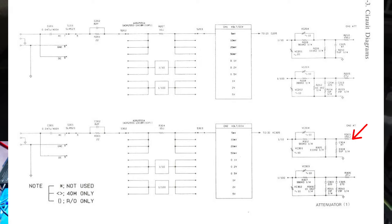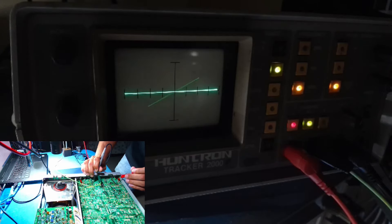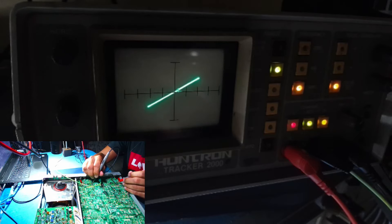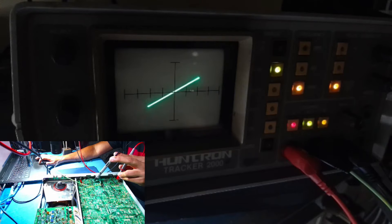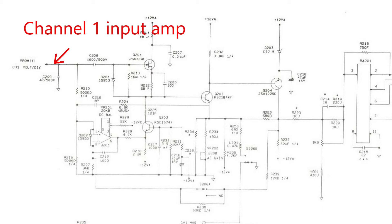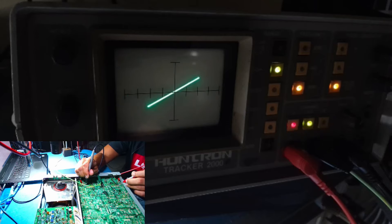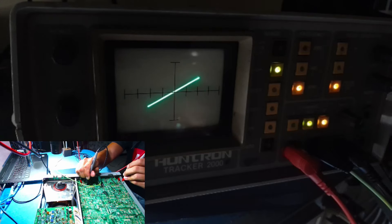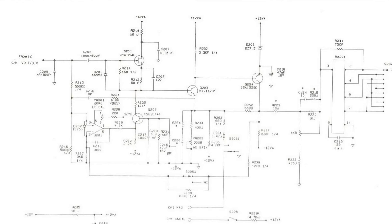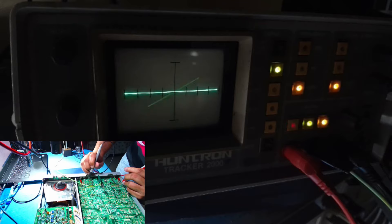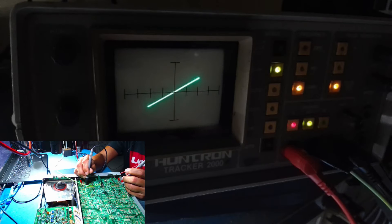R210, R303, R — this is the pattern. First step: channel 1 input, C209. Channel 2 input taker. C305, C209 — analog signature.